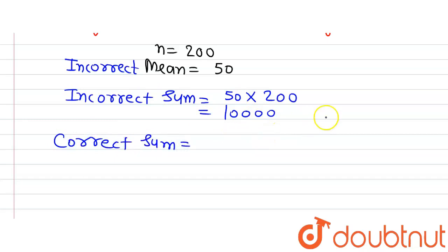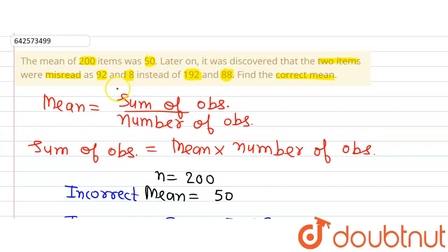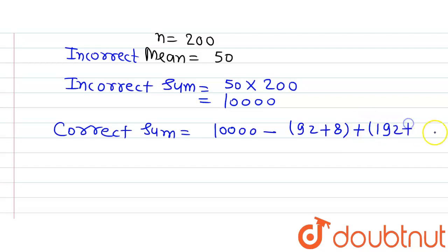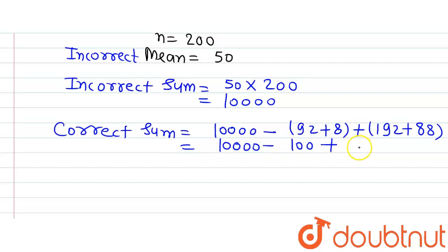Now let's find the correct sum. Since two items were misread as 92 and 8 instead of 192 and 88, we subtract 92 and 8 from the incorrect sum of 10,000 and add 192 and 88. So: 10,000 − (92 + 8) + (192 + 88) = 10,000 − 100 + 280 = 10,180. This is the correct sum.